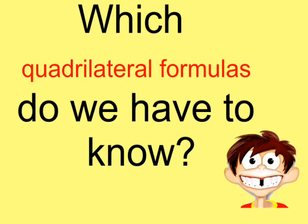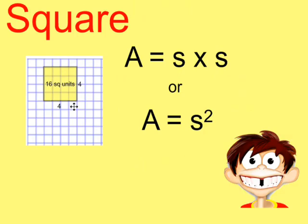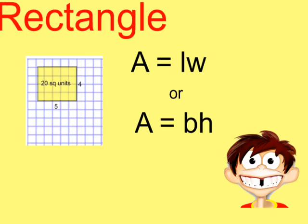So which quadrilateral formulas do we have to know? Well, we're going to take a look at three different ones in this video. The first is for a square, and the formula is area equals side times side, or side squared. You simply take one side and multiply it times another. So the area of this square would be 16 square units.